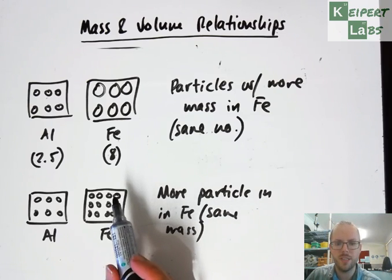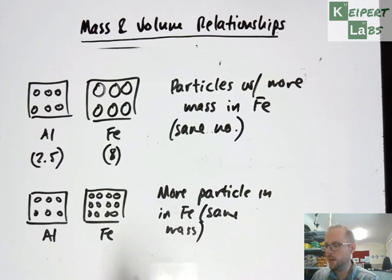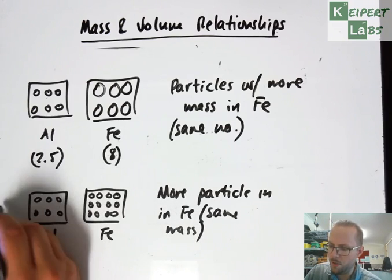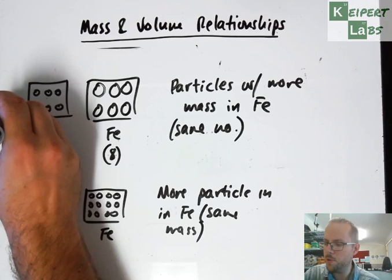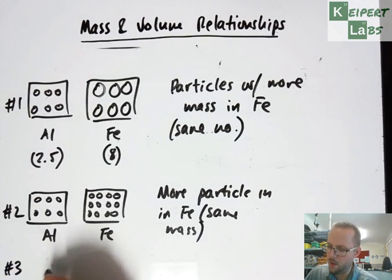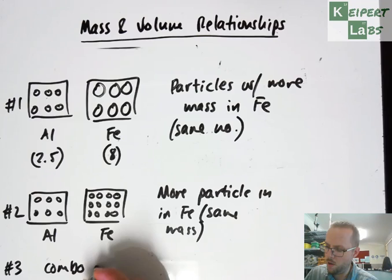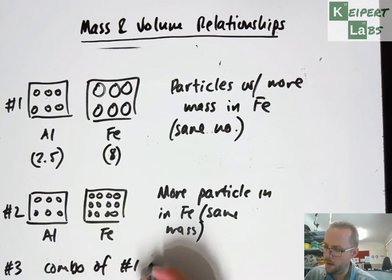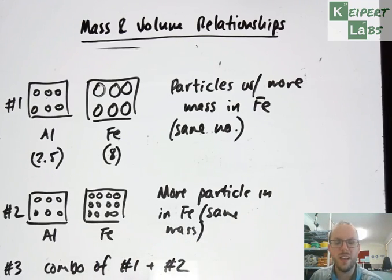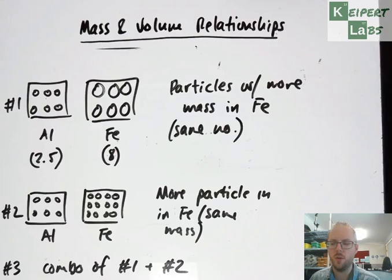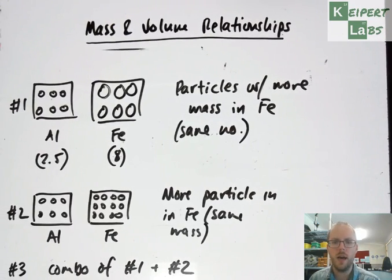And then, so this is option 2, option 1, or option 3 is kind of a combo of 1 and 2. As far as maybe the particles have more mass and maybe we do have more particles in that space, but we can't really know for sure. At the moment we've got these, these are our hypotheses, and so we kind of just have to wait and see.